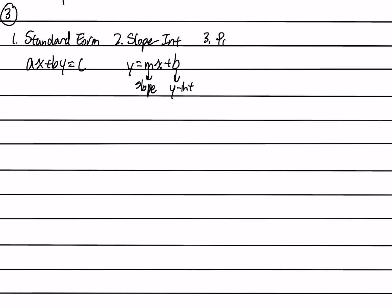Number three is called the point-slope form. Point-slope form is a little bit more complicated. However, it does contain some valuable information. Point-slope form contains one point. So it is in the form of y minus y1 equals m times x minus x1.